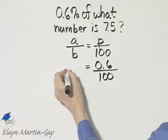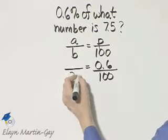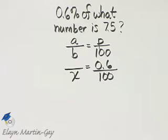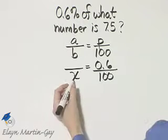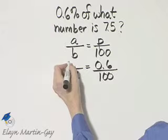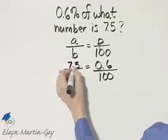Of what number? So that must be my base that I'm looking for. Of what number? Normally the base appears after the word of, is seven and five-tenths. So that's the amount.